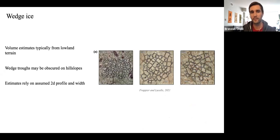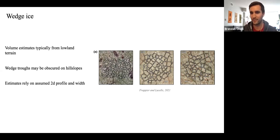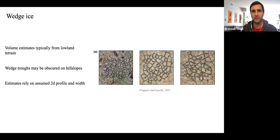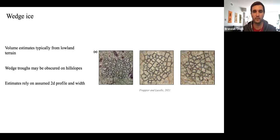On specific ice types: there have been more estimates lately in the literature on the volume of wedge ice from polygonal areas. These are typically from lowland or flatter terrain because you can see wedge ice nicely in those settings. However, on hill slopes the troughs of the ice wedge might be obscured due to downslope movement of material, so it's harder to see ice wedges on hill slopes. We may be underrepresenting ice wedge conditions on hill slopes versus lowlands. Also, all these estimates rely on an assumed 2D profile for ice wedges — often a triangle for epigenetic terrain or a rectangle if syngenetic — and we need good data on widths of ice wedges to estimate volumes.